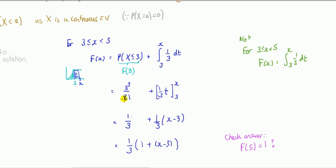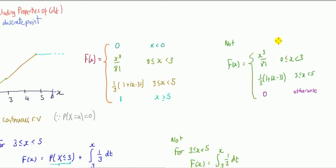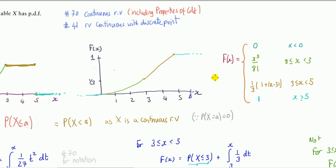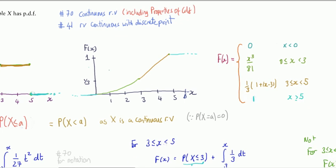Here are things that can go wrong. For the piece from three to five, a common error is integrating only the one-third segment from 3 to x — forgetting the first segment's contribution — which only gives the area in that blue portion, not everything to the left of x. Another easy slip is writing both pieces of the CDF as zero, confusing the CDF with the PDF which is zero outside those intervals.